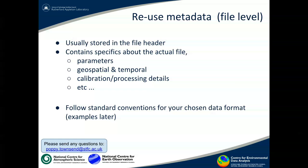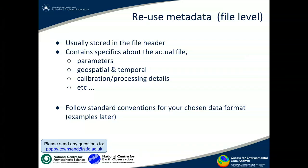Another type of metadata is the file level metadata. This is very important for reuse of the data. Somebody reusing your data who wasn't involved in the original project will need to find out all the details about the data. This is usually stored in the file header and it contains the specifics about the actual file: the parameters and variables included, the geospatial and temporal information, calibration and processing details pertaining to this particular file. There are standard conventions for many data formats and examples will be shown later.